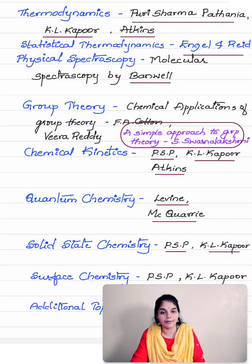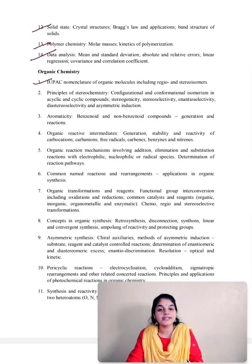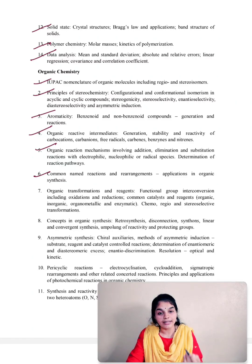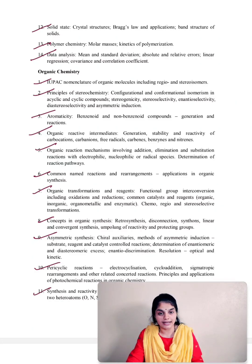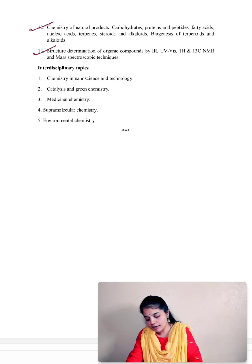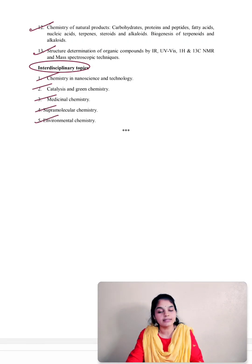Moving into the organic chemistry syllabus: you have IUPAC nomenclature of organic molecules, stereochemistry, aromaticity, organic reactive intermediates, organic reaction mechanisms, common named reactions and rearrangements, organic transformations and reagents, organic synthesis, asymmetric synthesis, pericyclic reactions, heterocyclic chemistry, chemistry of natural products, organic spectroscopic techniques, and interdisciplinary topics including chemistry in nanoscience and technology, catalysis and green chemistry, medicinal chemistry, supramolecular chemistry, and environmental chemistry.